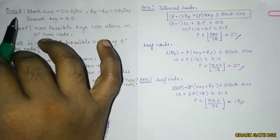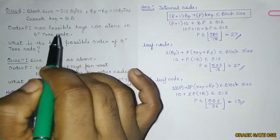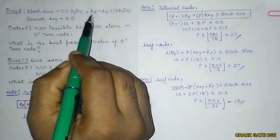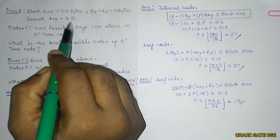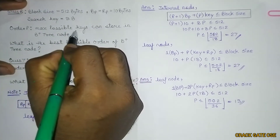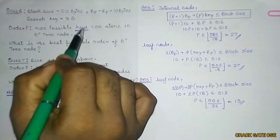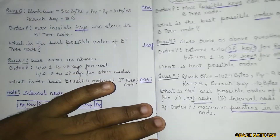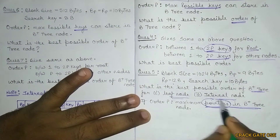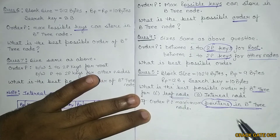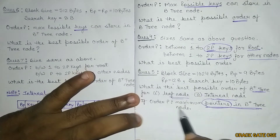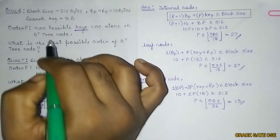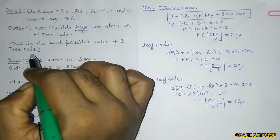Now let's start with question number 6. Unlike question number 5 of the previous video, here we are having the block pointer and record pointer size as the same. The block size is 512 bytes, block pointer and record pointer size is 10 bytes, and the search key is 8 bytes. Here the order is given as maximum possible keys, whereas in the previous question number 5, the order was given as pointers, not the key.